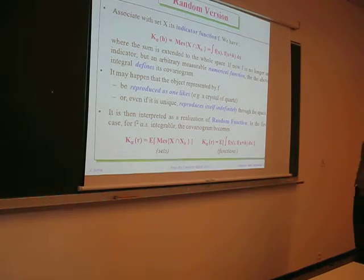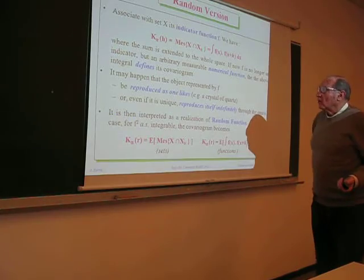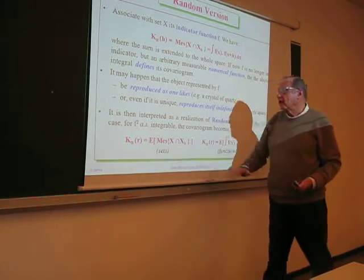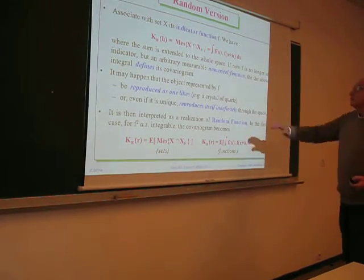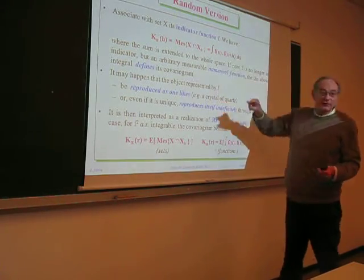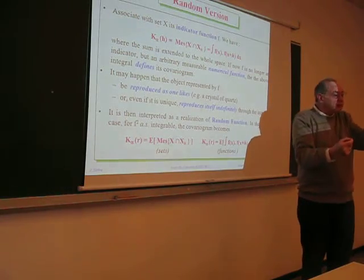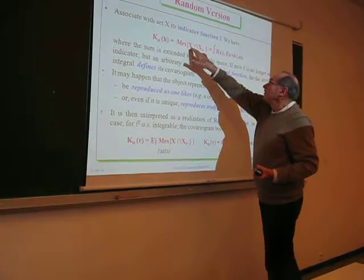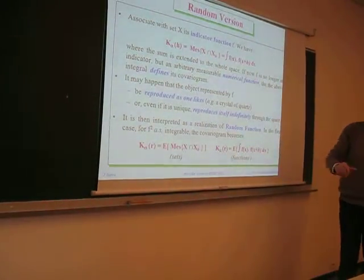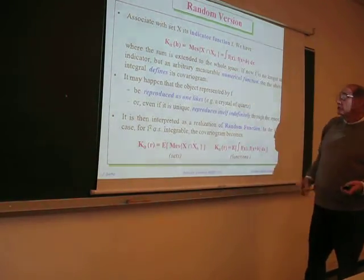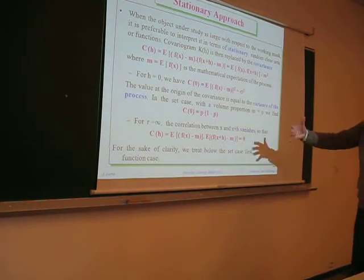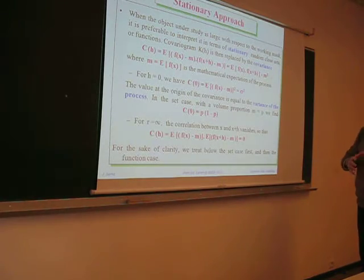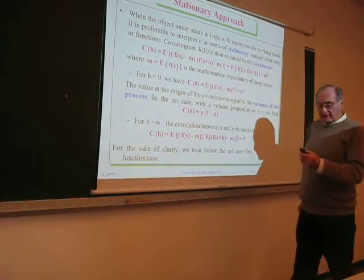Now we randomize. We consider a set defined in a random way. We can also associate with each point a certain function, and instead of taking the intersection, take the product of the function values. Instead of using the indicator function which is one inside the set and zero outside, you can take any function associated with the set and then take the product. This is exactly the generalization. We then speak of covariance. If the set becomes very large and you cannot sum, you replace the sum by an average.